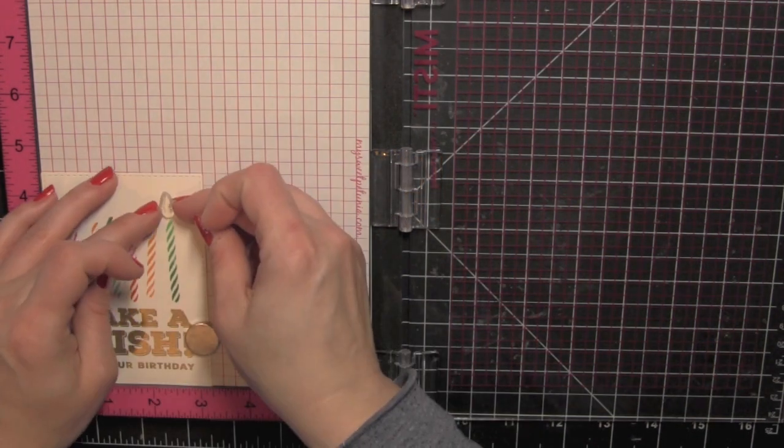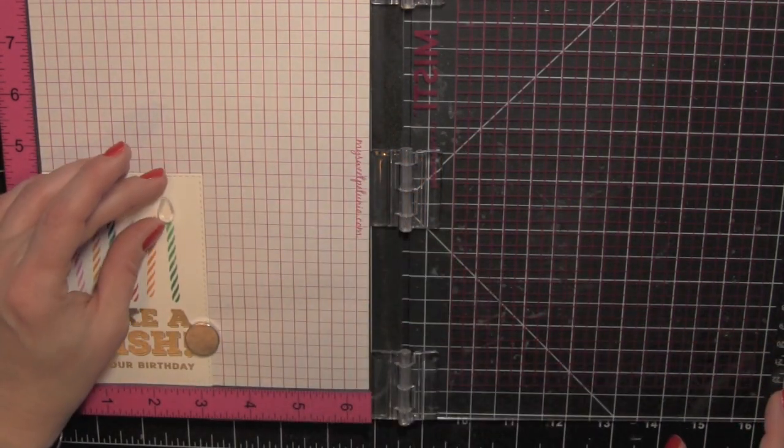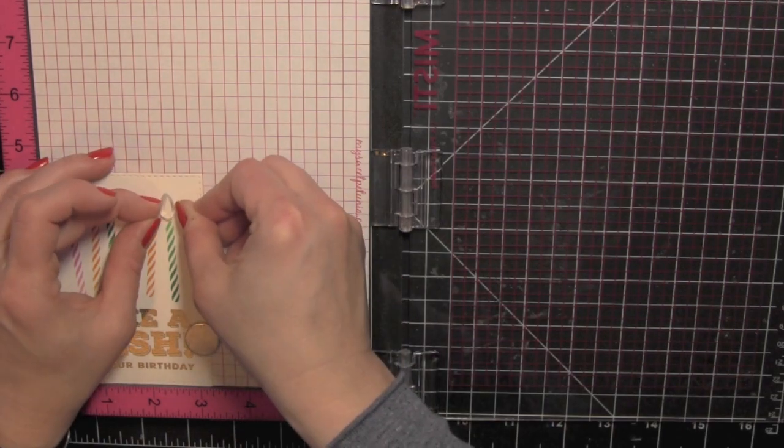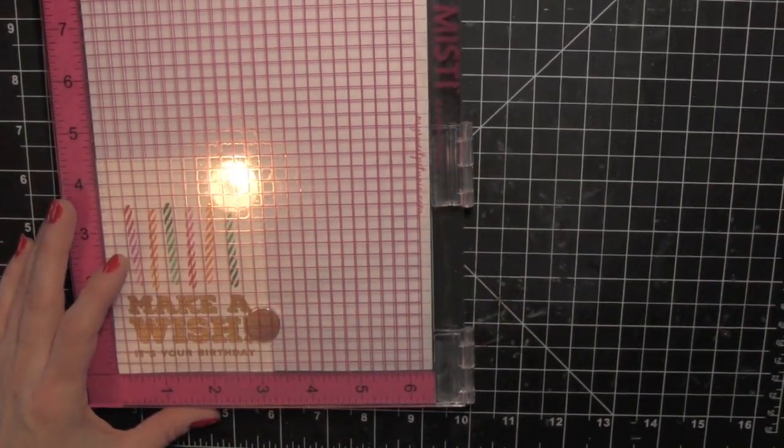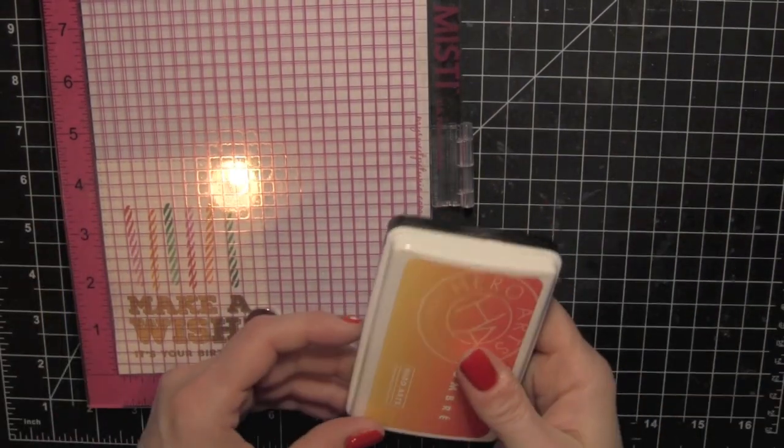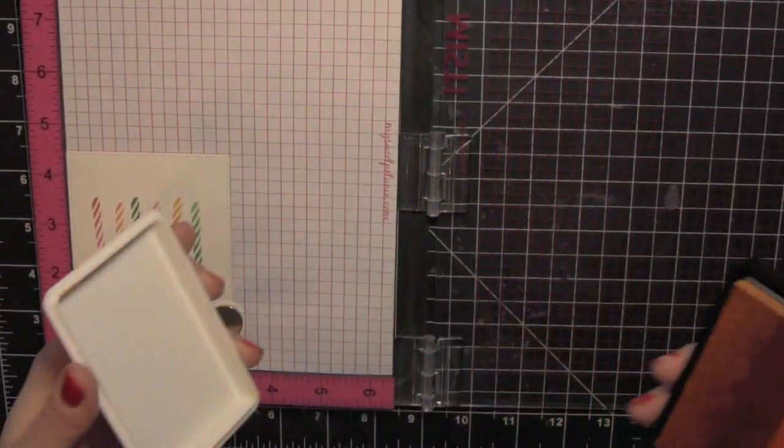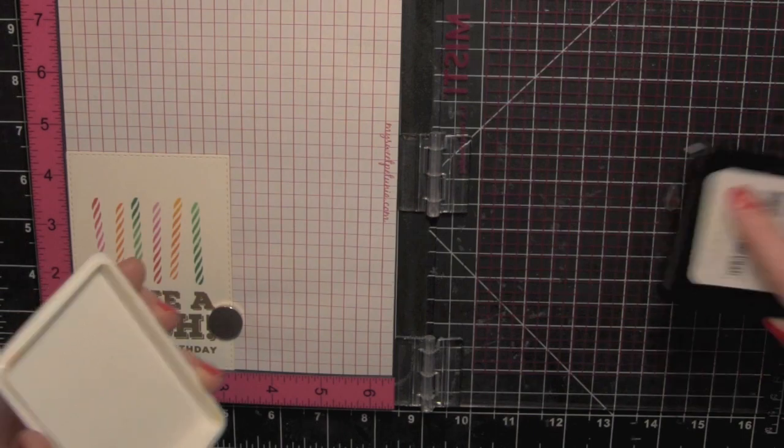Now for the flames on top of the candle there are a couple sizes to choose from and you could probably even layer them to do a two-tone flicker there at the top. I'm going to use the larger of the two and then I'm using my same ombre ink pad but I'm just inking it up with a single color.